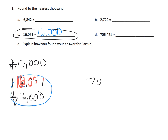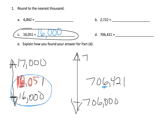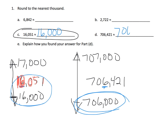Similarly, if we take 706,421, I am modeling this one. If we were going to draw a number line, the first thing we need to do is recognize the thousands place. The number line would go from 706,000 at the bottom to 707,000 at the top. Our task is to figure out: is this number closer to 706,000 or 707,000? We see that it rounds down — it's closer to 706,000.